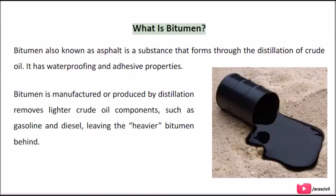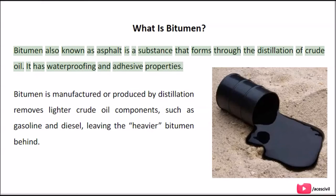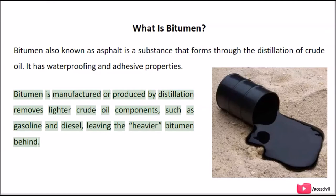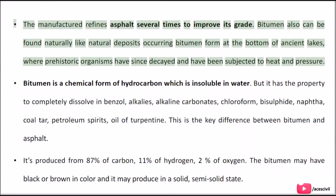What is bitumen? Bitumen, also known as asphalt, is a substance that forms through the distillation of crude oil. It has waterproofing and adhesive properties. Bitumen is produced by distillation, which removes lighter crude oil components such as gasoline and diesel, leaving the heavier bitumen behind. The refining process refines asphalt several times to improve its grade. Bitumen can also be found naturally — natural deposits occur at the bottom of ancient lakes, where prehistoric organisms have decayed and been subjected to heat and pressure.